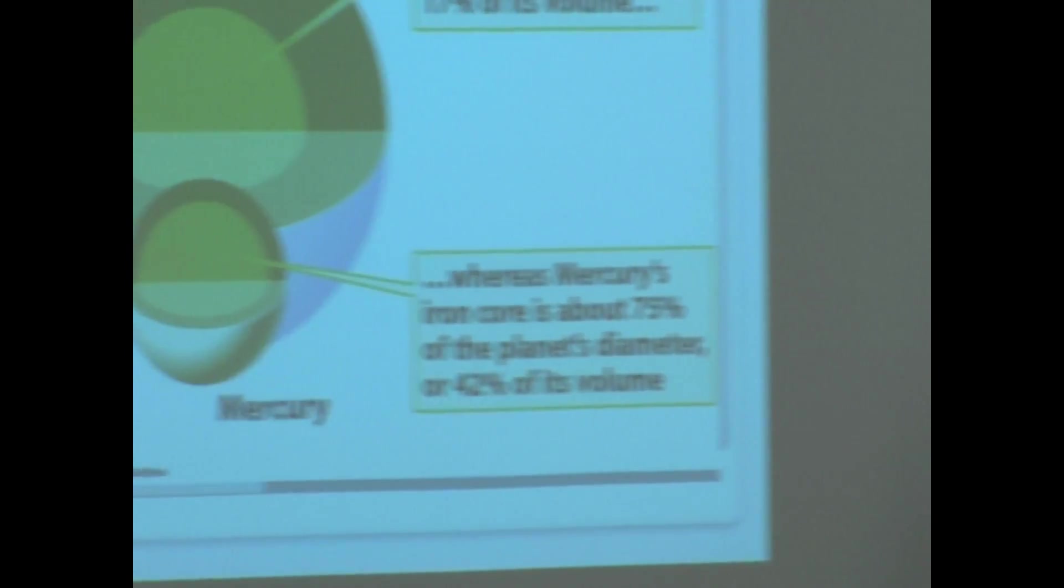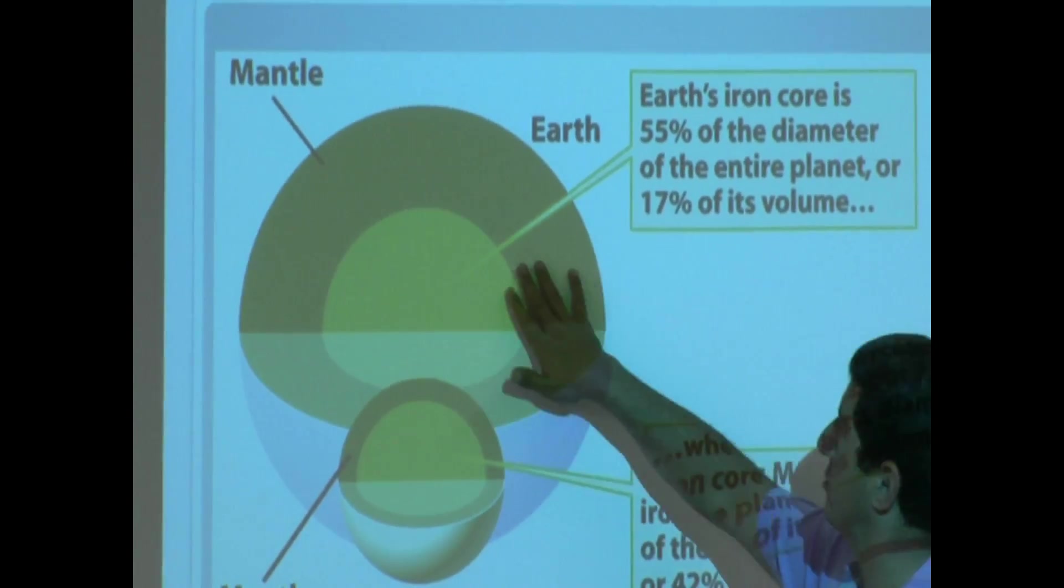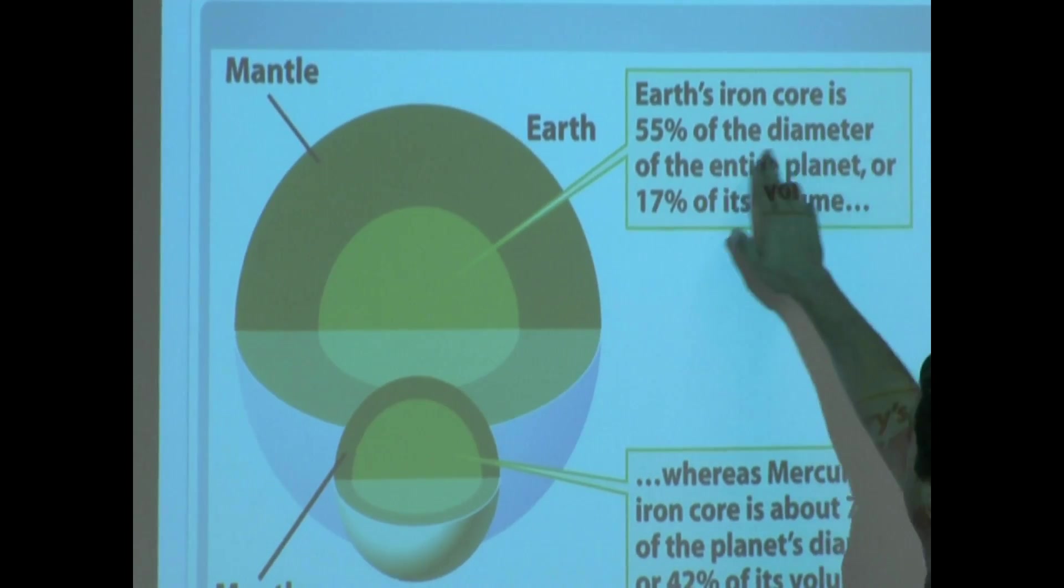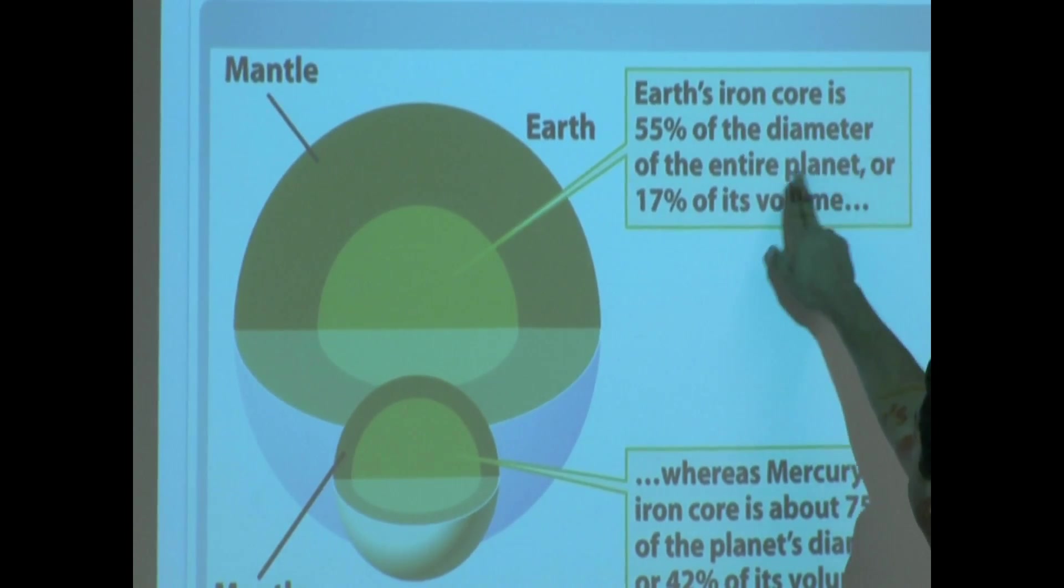This is a picture of the interior of Earth. Earth's iron core is 55 percent of the diameter of the entire planet, or 17 percent of its volume.